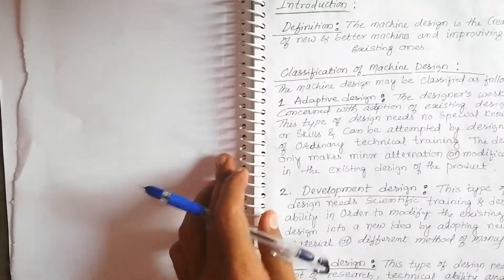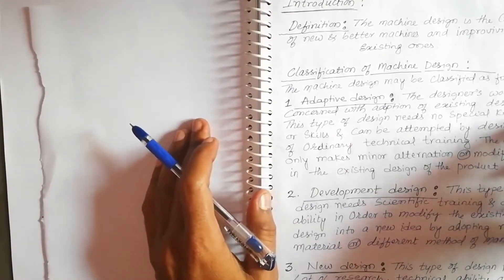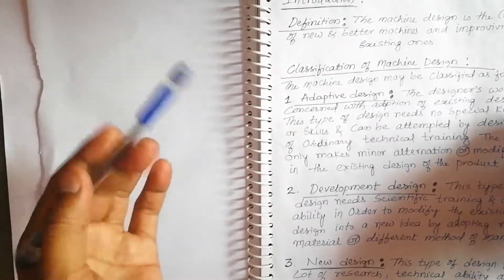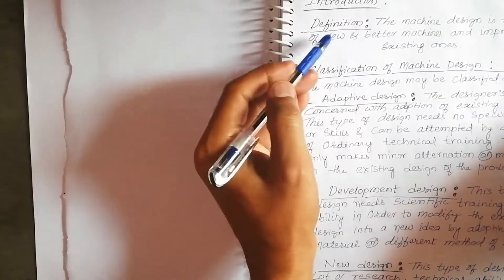Hello students, I have planned for Design of Machine Elements One. In this first unit, we are going to explain the introduction parts. First, we'll have the definition for design of machine elements.